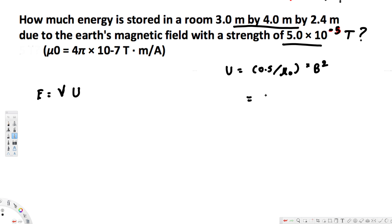Now, let's go ahead and plug the values. Or we can bring it together with this equation and plug it together. So, this is going to be volume is 3 times 4 times 2.4 multiplied by this one. This is 0.5 divided by mu naught times B squared.